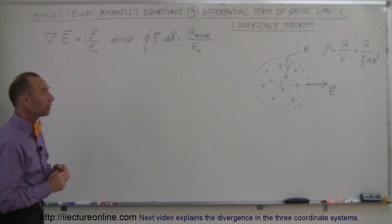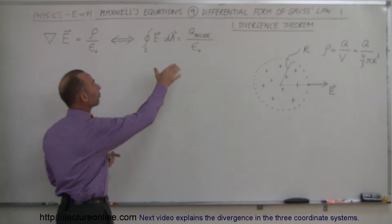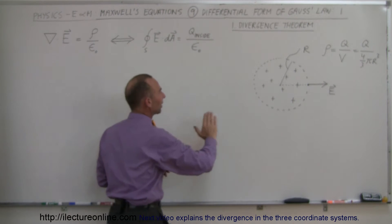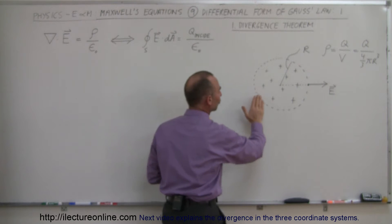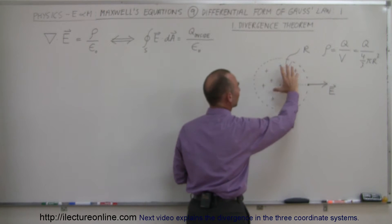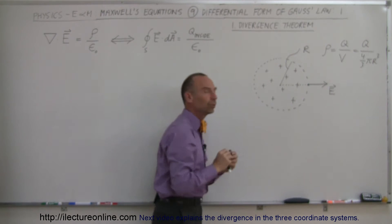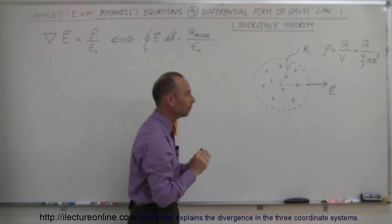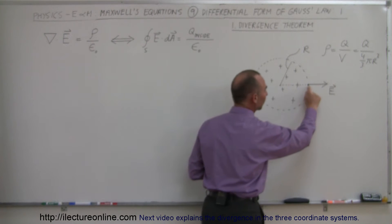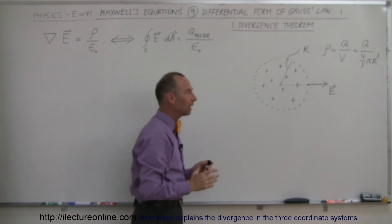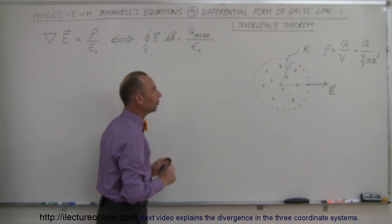Just as a quick reminder: how do we read the integral form of Gauss's Law? If we have a certain amount of charge distribution — let's say in a spherical volume with radius r — and we want to know what the electric field strength is at some point on the edge of that spherical volume, if you want to know what that is,